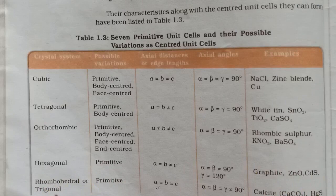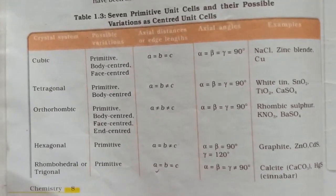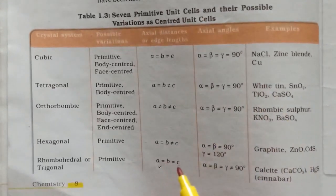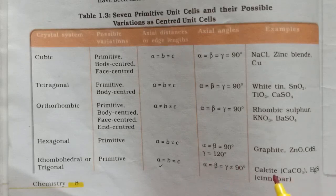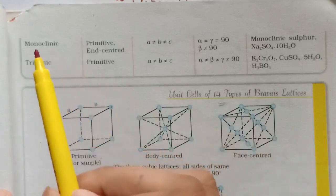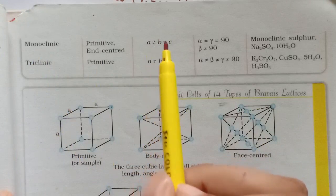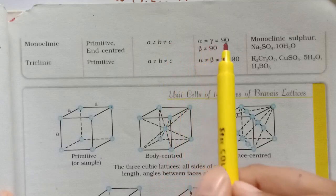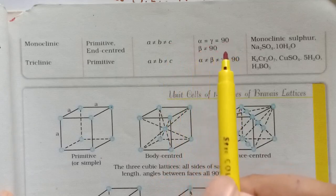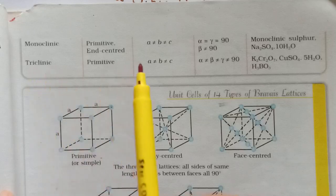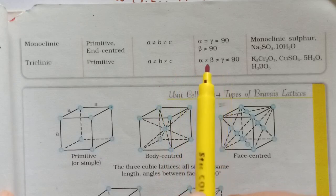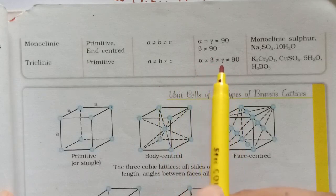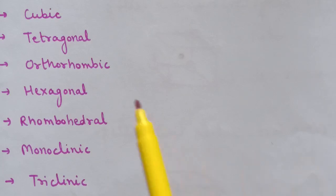In monoclinic: A ≠ B ≠ C, and alpha = gamma = 90° whereas beta ≠ 90°. In triclinic: A ≠ B ≠ C, and the angles alpha, beta, and gamma are all not equal to each other and none equal to 90°. These are the seven types of primitive unit cells.